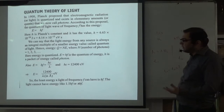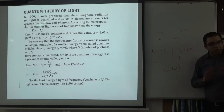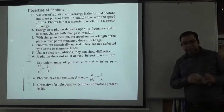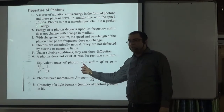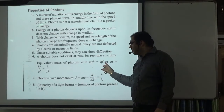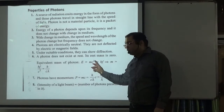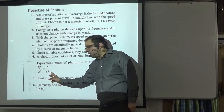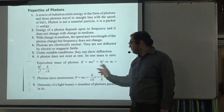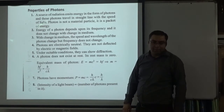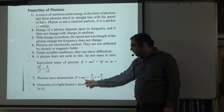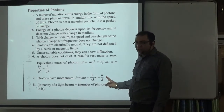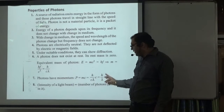We have already discussed quantum theory. Let's look at the main points. Energy equals mc squared. Energy equals h times frequency, so m equals h times frequency divided by c squared. Since frequency divided by c equals 1/λ, the photon mass equals h divided by λc. For photon momentum: m times c gives h divided by λ. So photon momentum is h/λ.